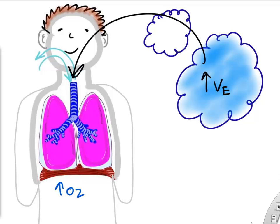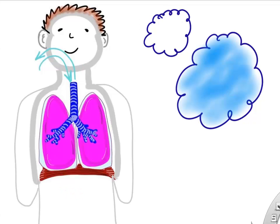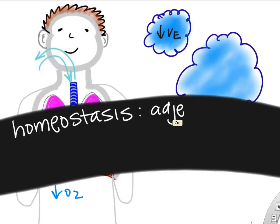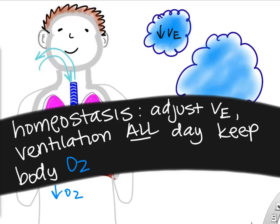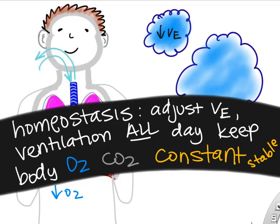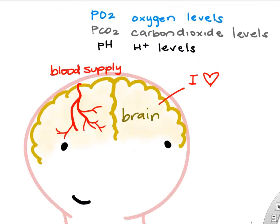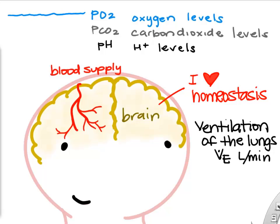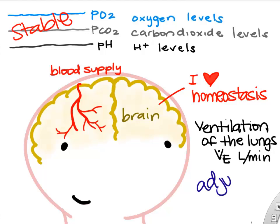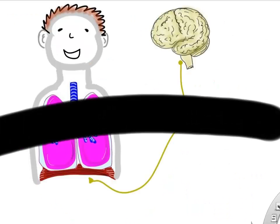If you increase your ventilation, you increase the amount of oxygen getting into your lungs. If you decrease it, you decrease oxygen intake. Our body continually adjusts minute ventilation all day long to maintain homeostasis, regulating oxygen levels, CO2 levels, and pH — all things we want to keep constant. In the brain's quest to maintain homeostasis related to ventilation, we adjust ventilation up and down all day to match our metabolism.